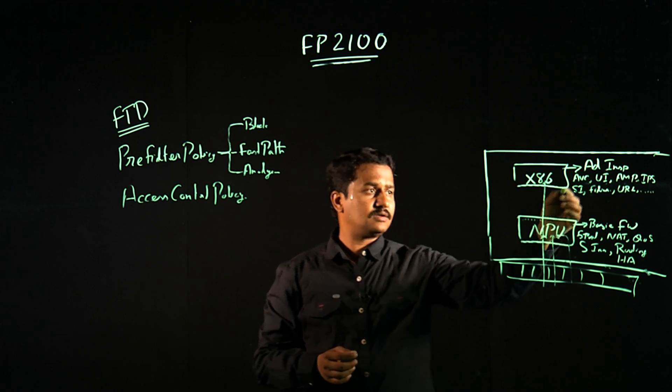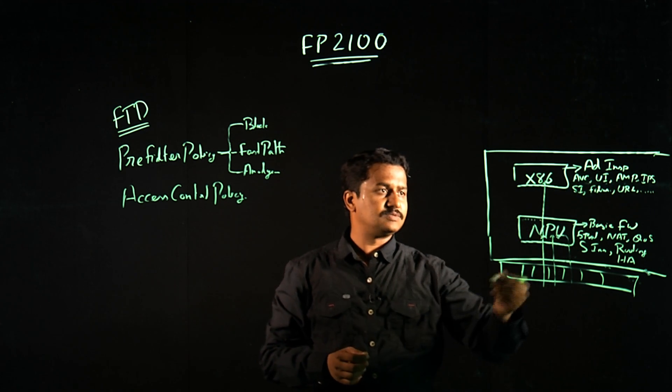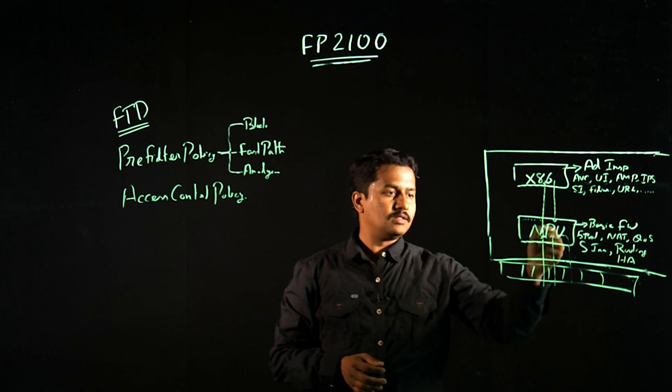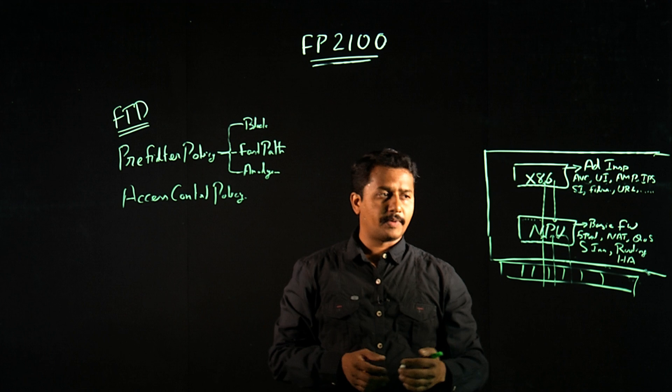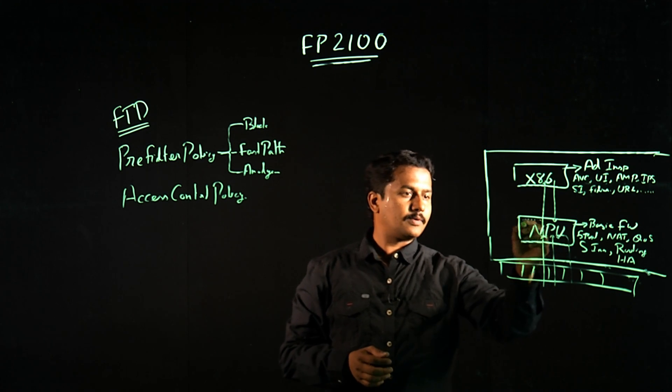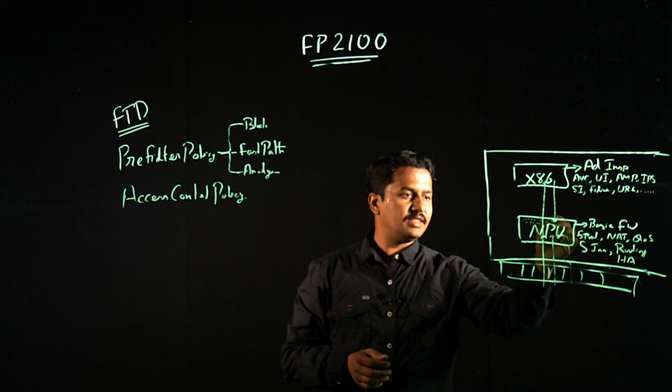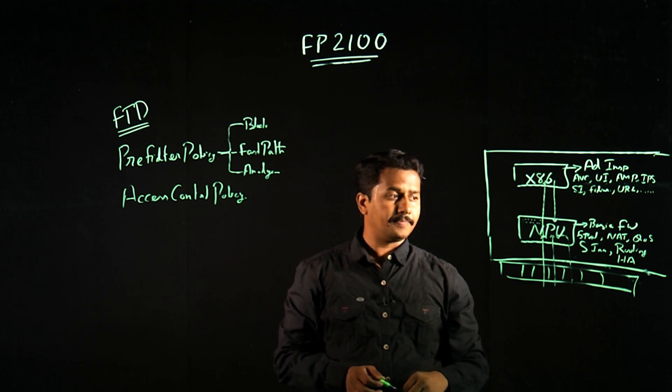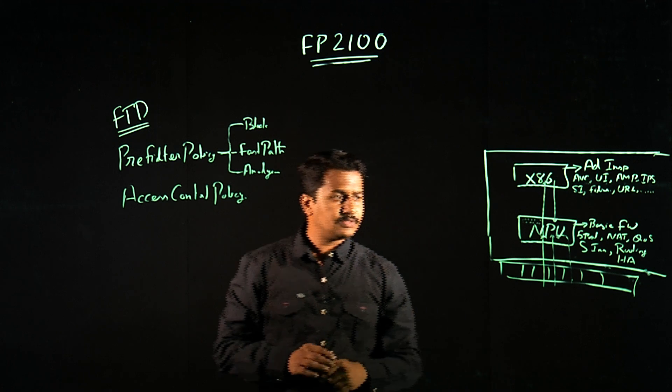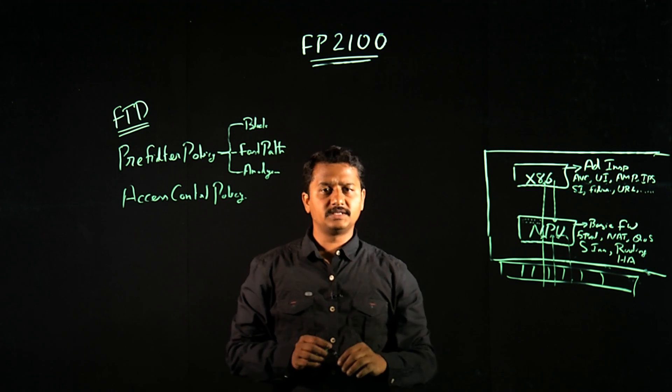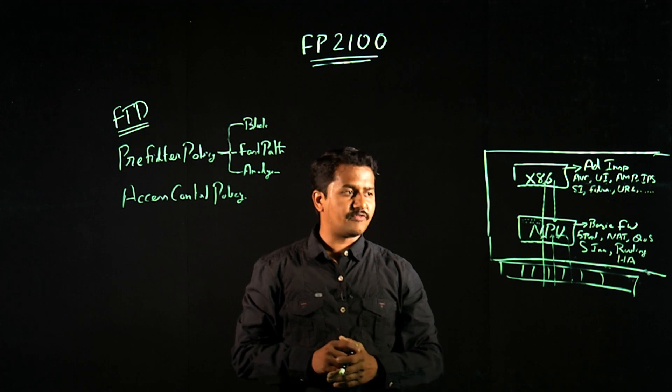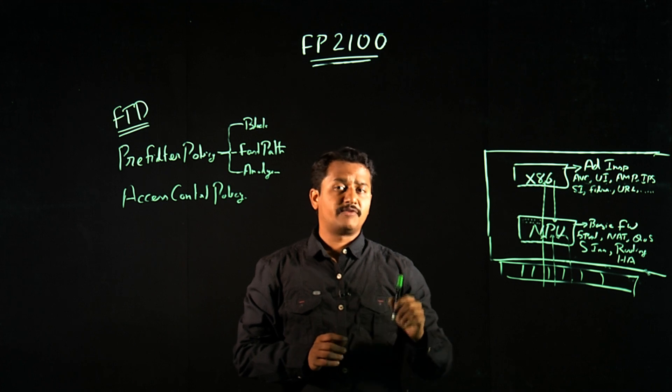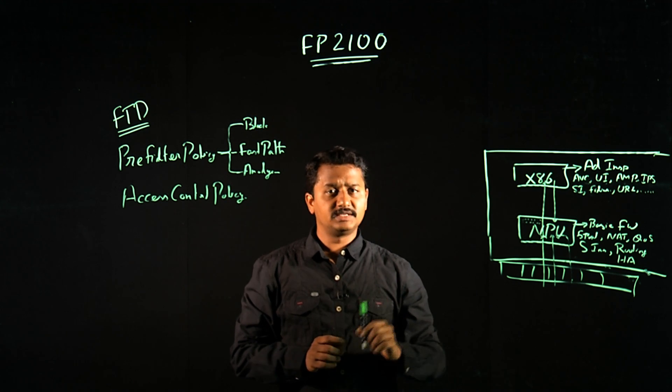Based on the rule and the policies with the actions, the x86 sends a verdict back to the NPU. Based on the verdict, the NPU allows the packet or drops the packet. In case if it says allow the packet, the NPU creates a connection table and then routes the packet to the exit interface based on the routing table. By this way, we were able to optimize the performance on this platform. This is a key differentiator between the Firepower 2100 series platform and our competitor on this segment.